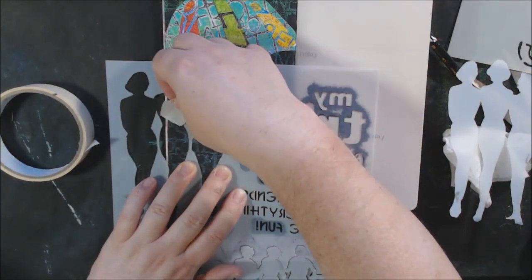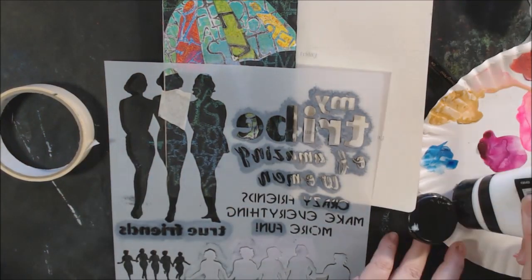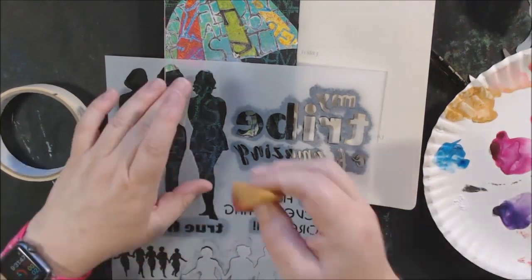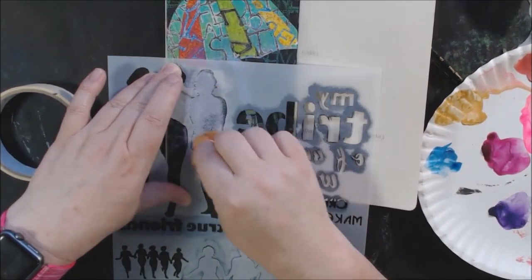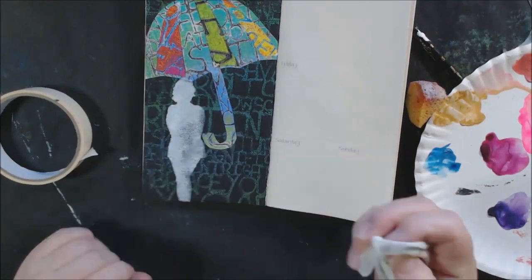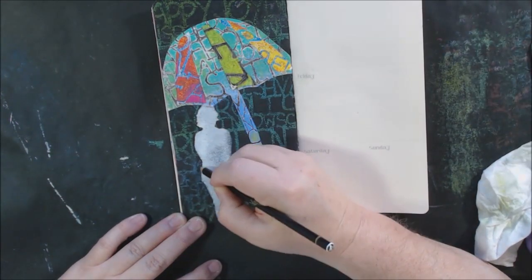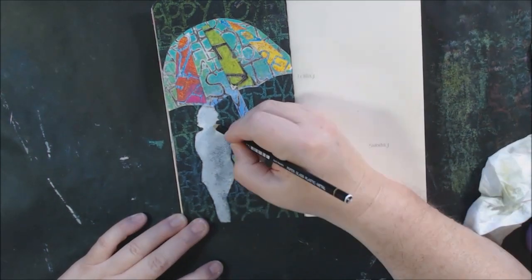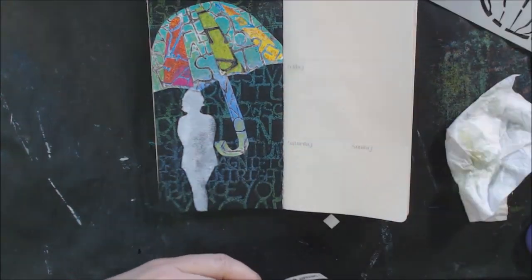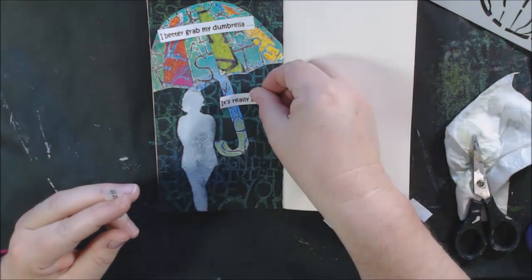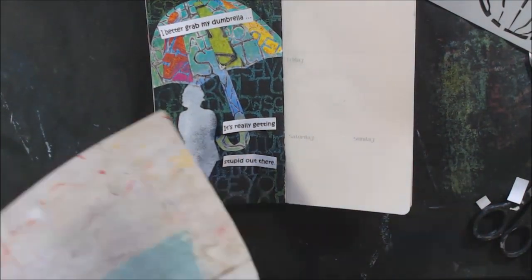So then I decided I needed a person on my page and this stencil, it's about your tribe or something like that, I think it's designed by Carolyn Dube, this is a stencil girl one. I decided to stencil a figure on there. This is one of the stencils that you can get from stencil girl that have a stencil and a mask. So there's these little tiny connecting spots and you just trim the little connectors and you can take the mask out. And then you have a stencil which is the outside of things and a mask which is the inside of things, and they're both very useful in different ways.